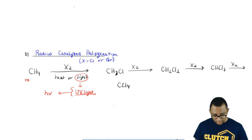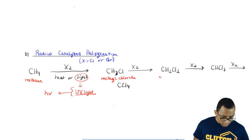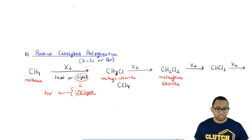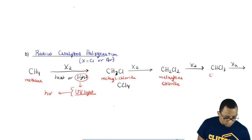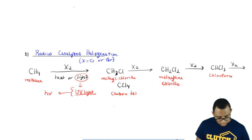You go from methane to methyl chloride to methylene chloride. Remember I told you earlier that CH2 is called methylene. Methylene chloride to chloroform to finally carbon tetrachloride.